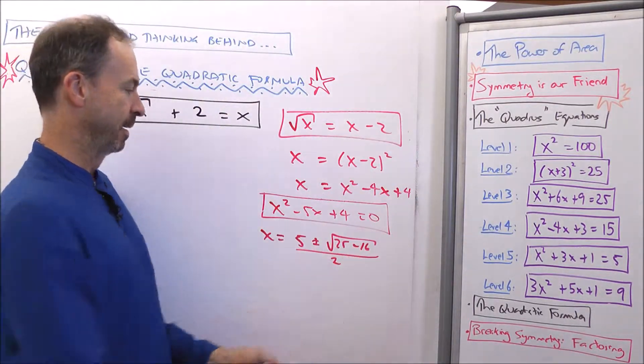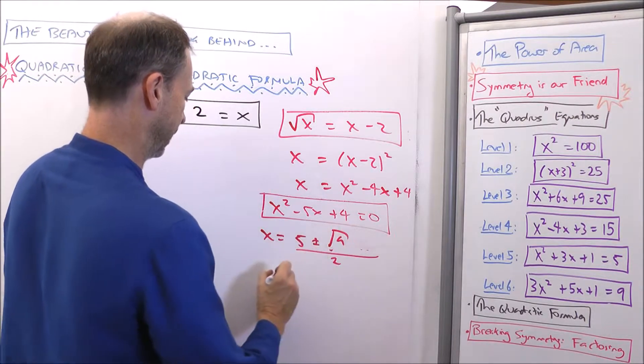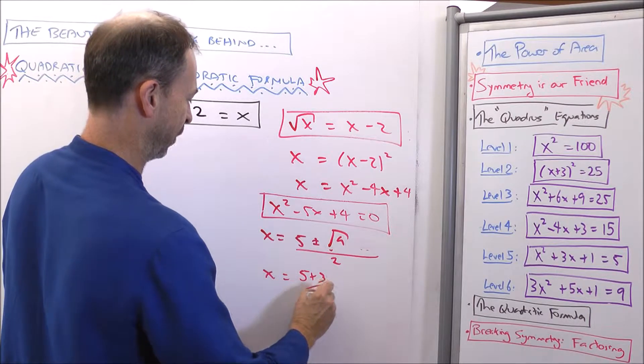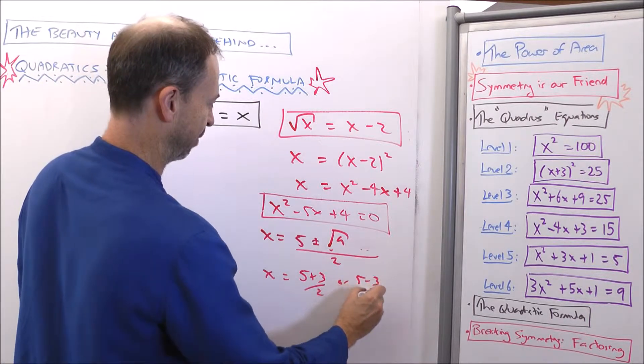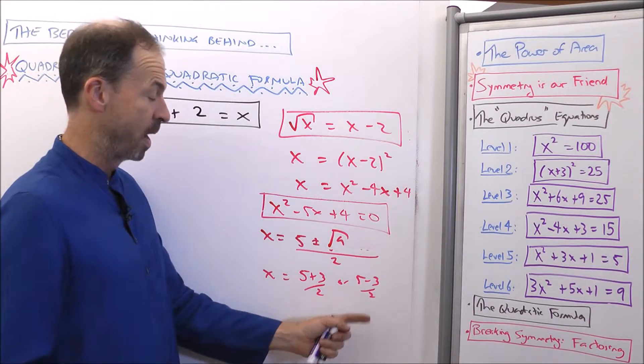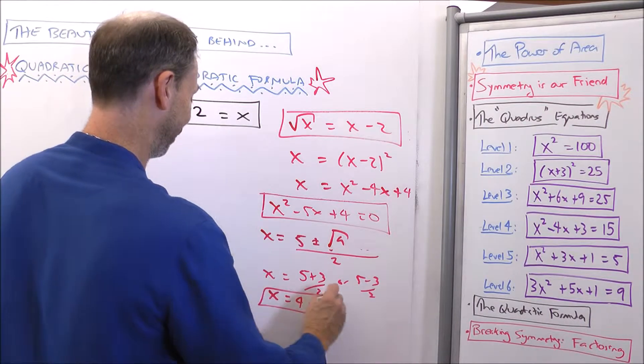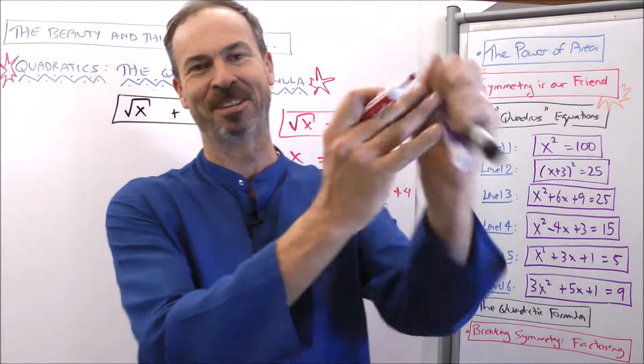Square root of 9. 25 minus 16 is 9. So this is the square root of 9. So this is x is either 5 plus 3 over 2 or 5 minus 3 over 2. So it's 8 over 2. It's 4 or 1. x is 4 or 1. Alright, looking good. And you say, done, done, done, done.